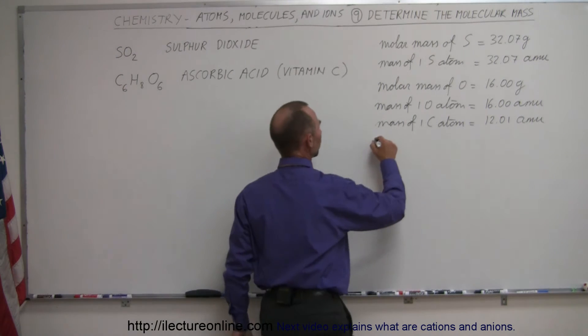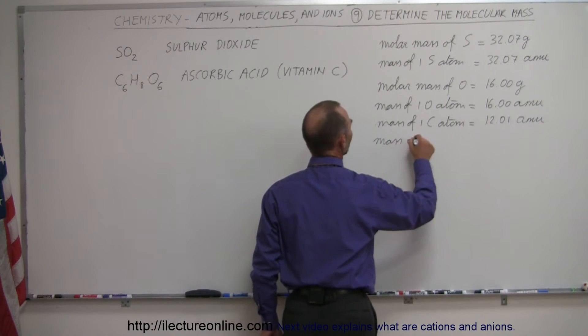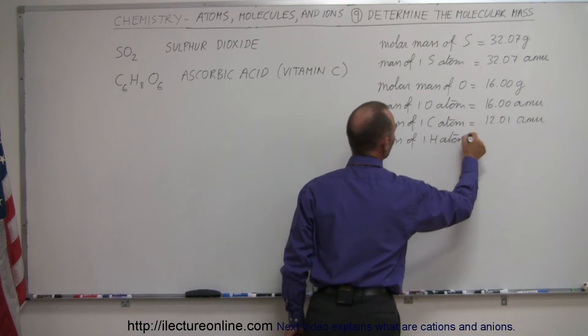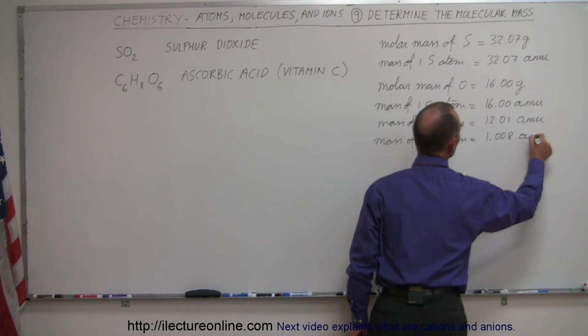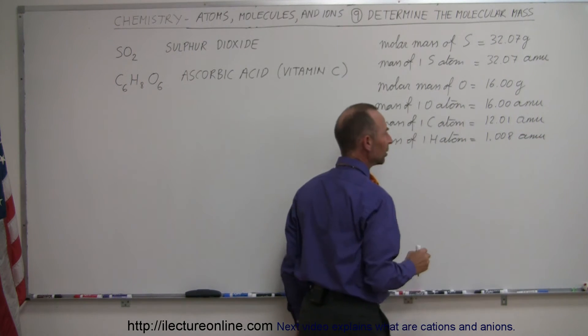And finally, for hydrogen, the mass of one hydrogen atom is equal to 1.008 AMUs, so slightly more than a single AMU.